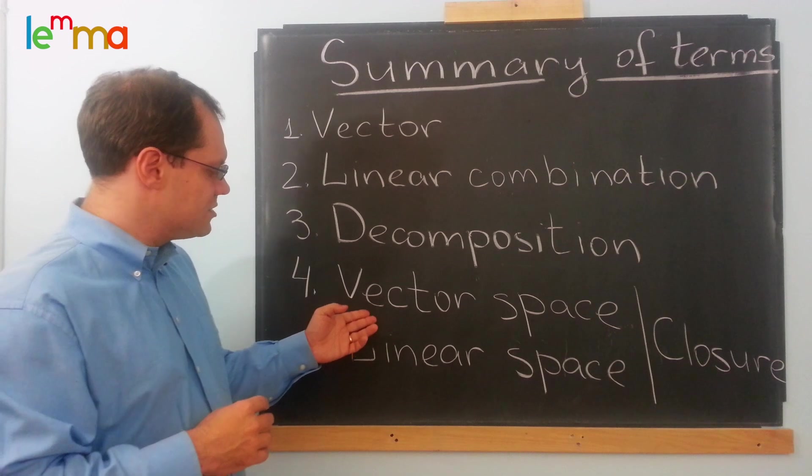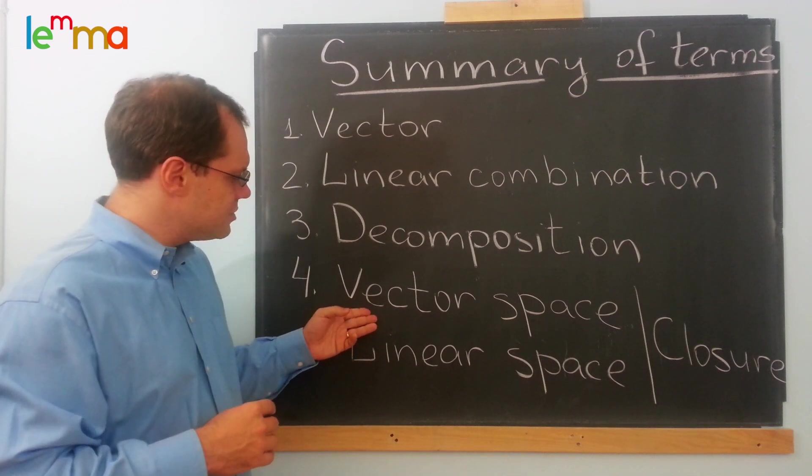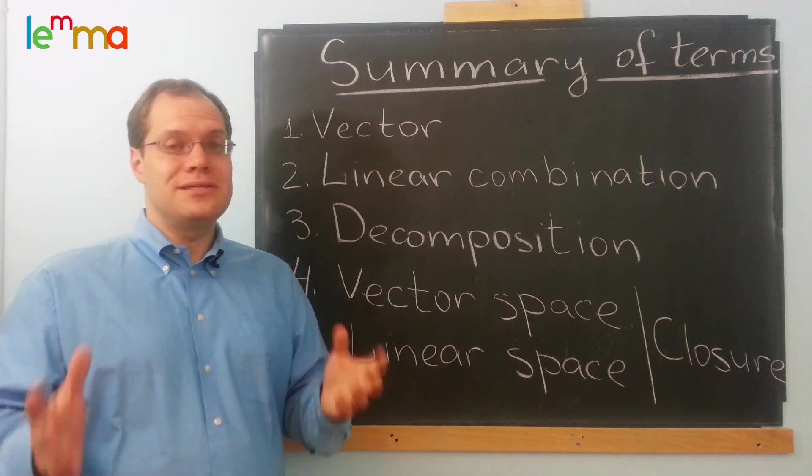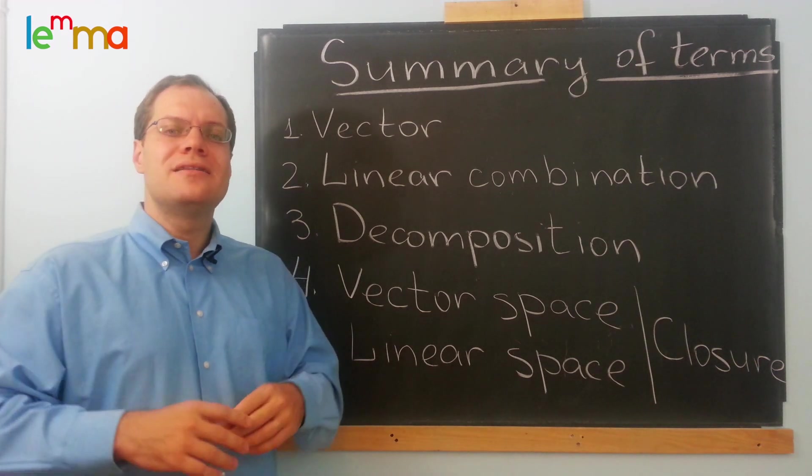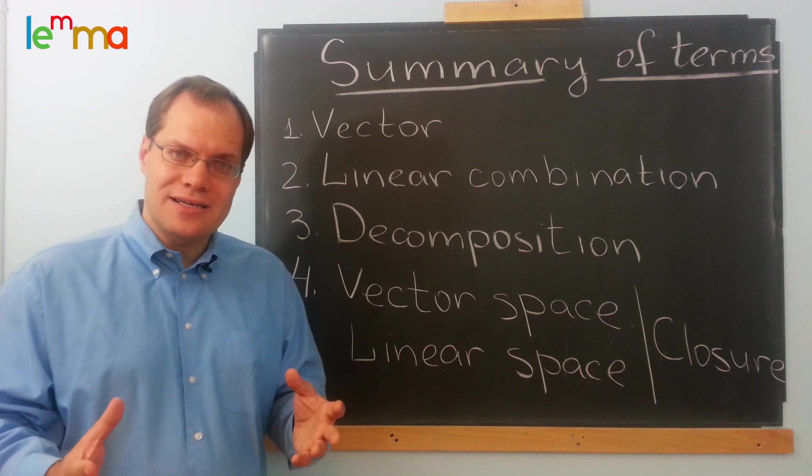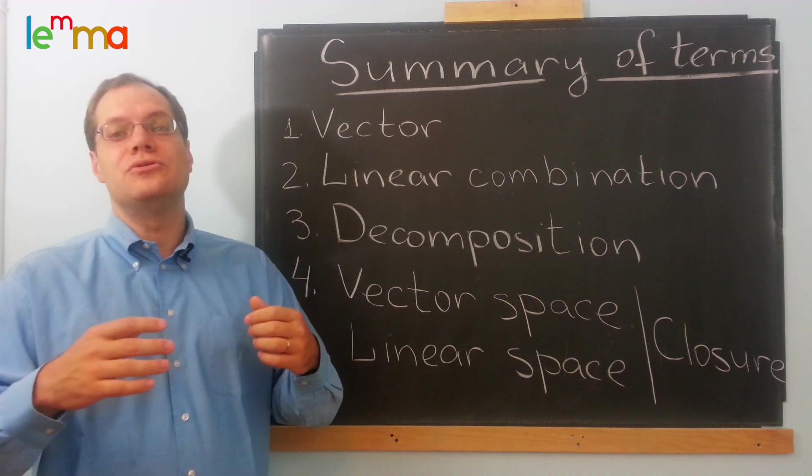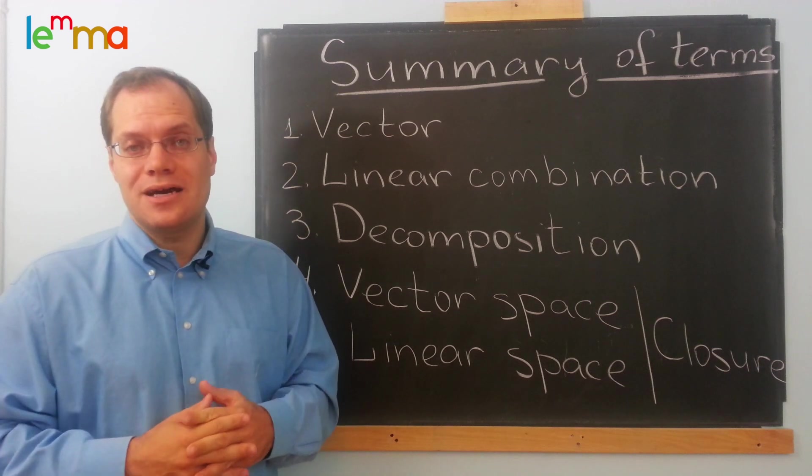And then, I must have used a couple times without even realizing it, the terms vector space and linear space. Those are complete synonyms, and they mean the totality of all objects of the same kind that can be added together and multiplied by a number to produce another object of the same kind.